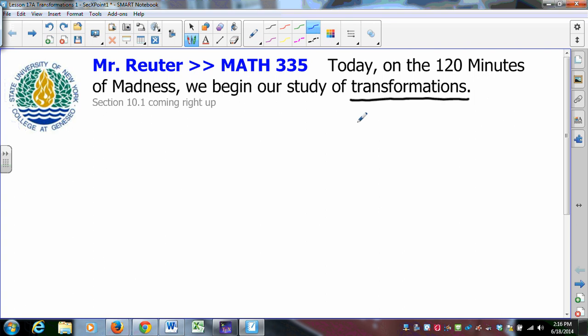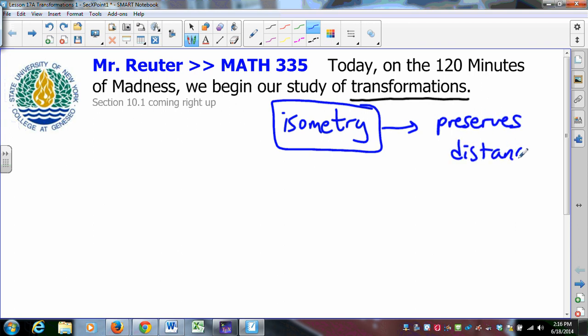The kind of transformation that we really want to focus on is the isometry. An isometry is a transformation that preserves distance. A transformation is an isometry that preserves distance. That is to say, if you have an isometry from the plane to the plane, and A and B are points in the plane,